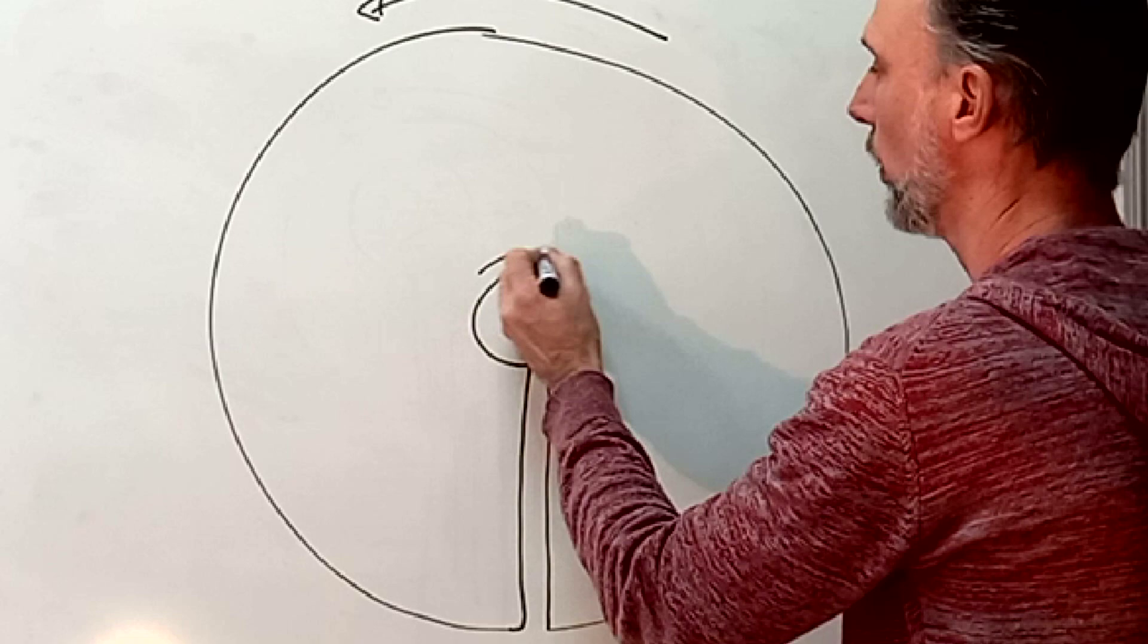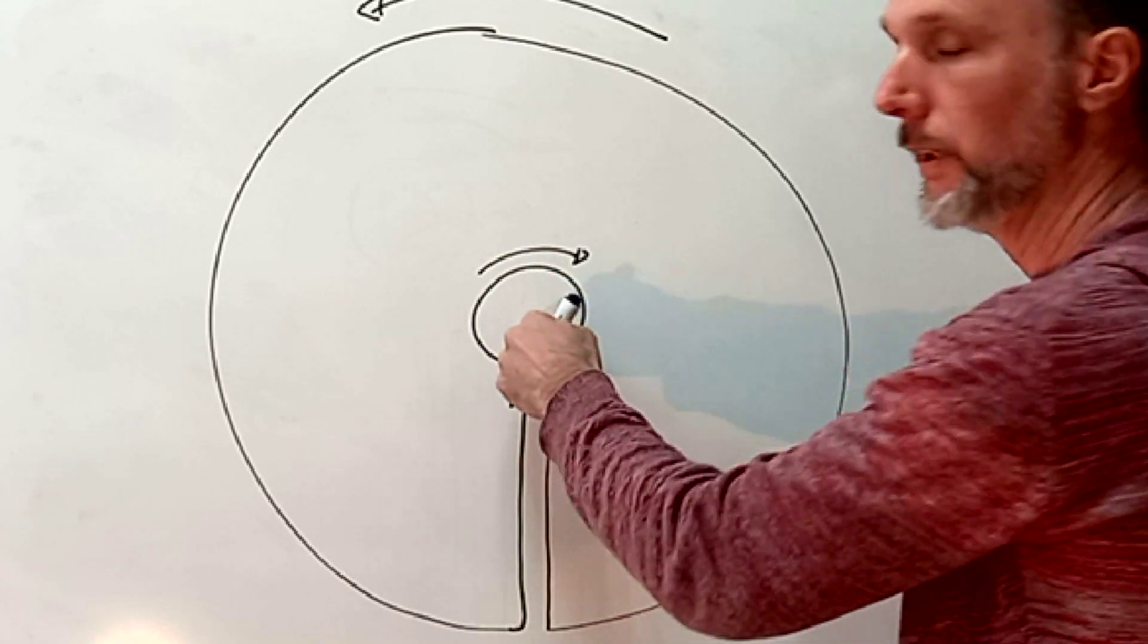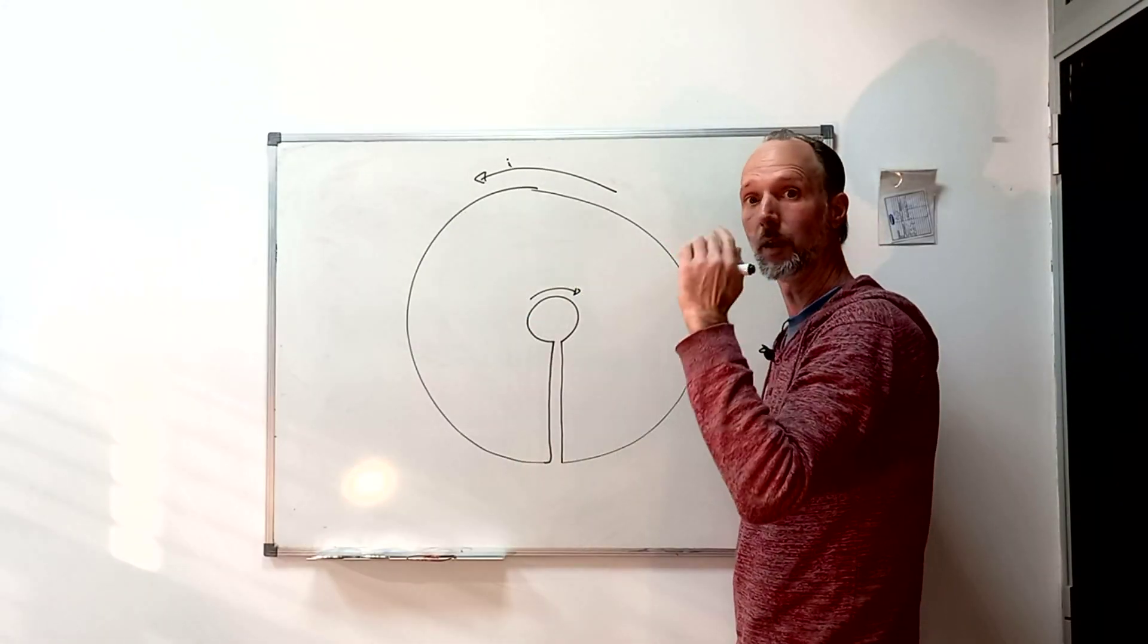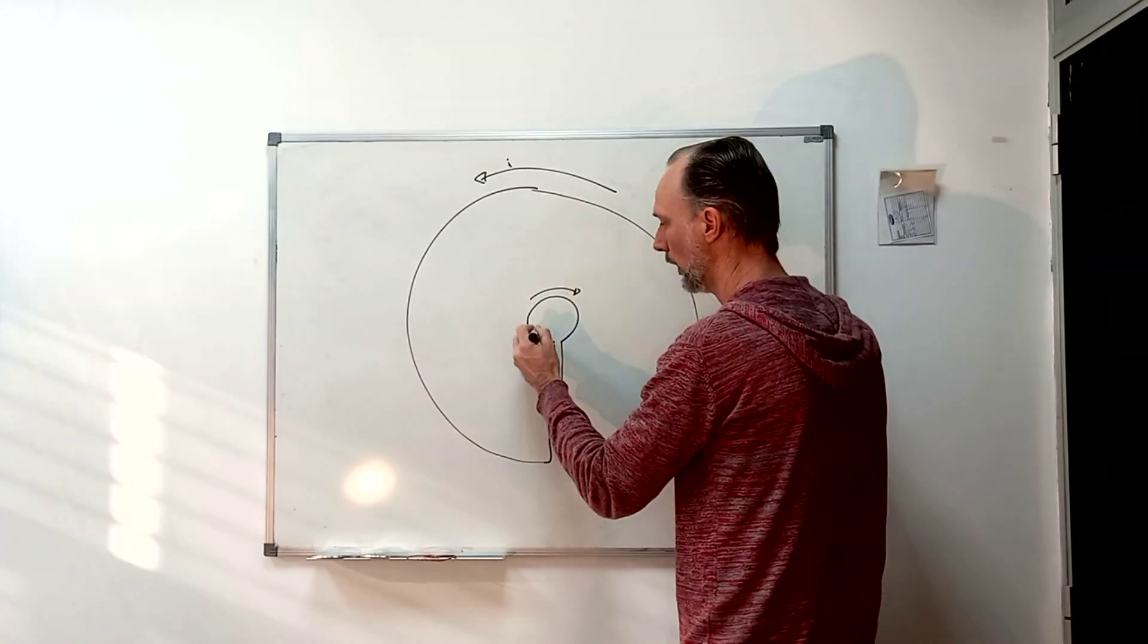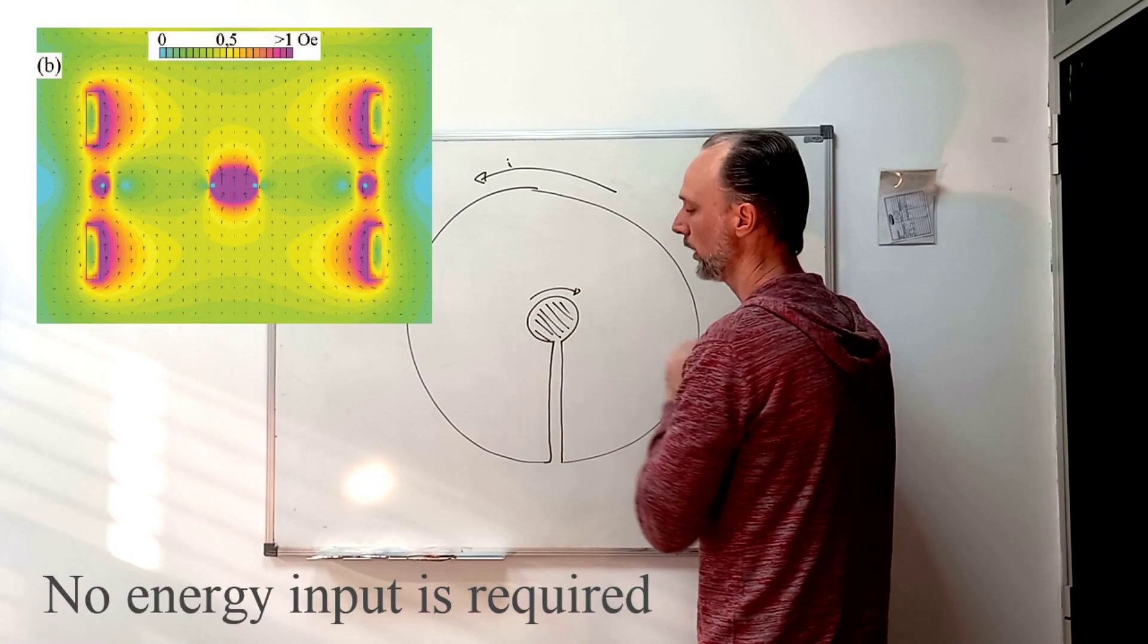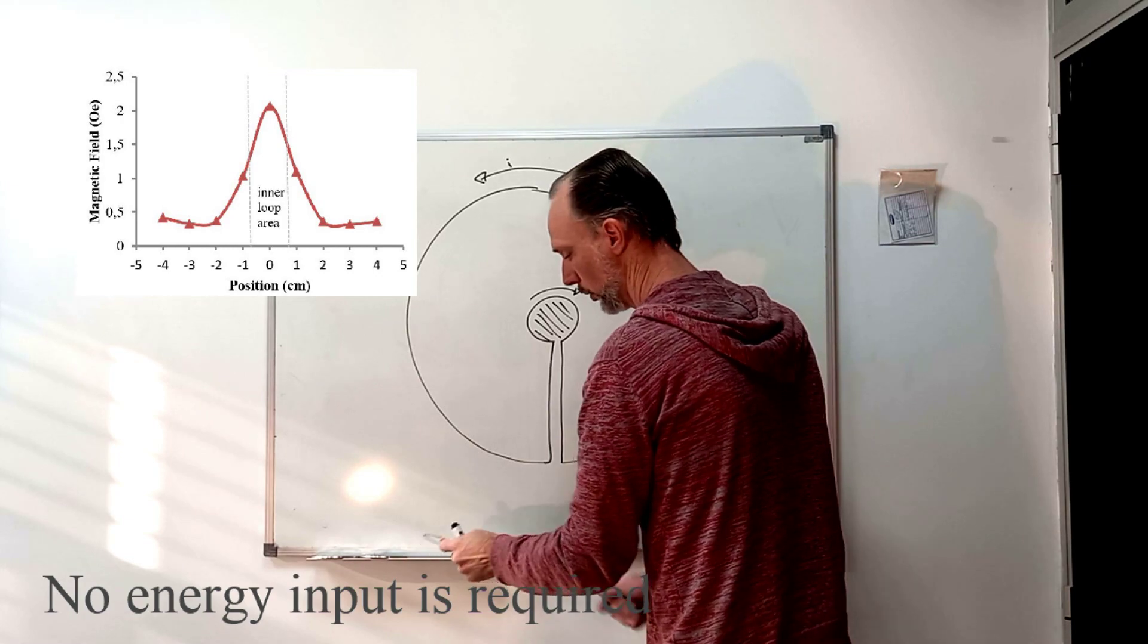So the induced current will flow in the opposite direction, so in the inner loop the magnetic field will be in the same direction as the original one. So in here the magnetic field will be stronger, so we create